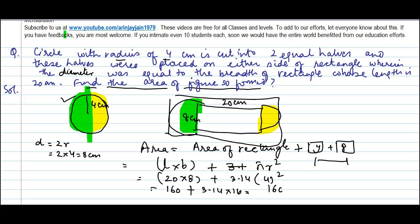Solving this: 3.14 × 16 = 50.24, so the total is 160 + 50.24 = 210.24 cm². This is the area of the figure. Please don't focus on the lines — they are not straight. What we need to understand here is the concept.